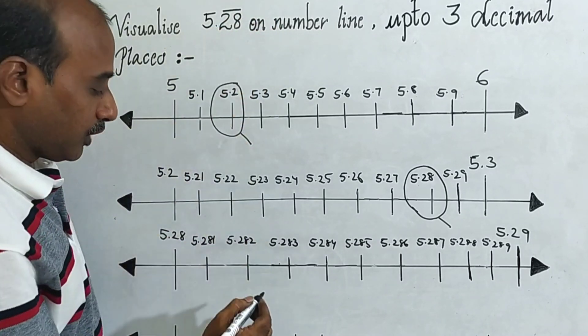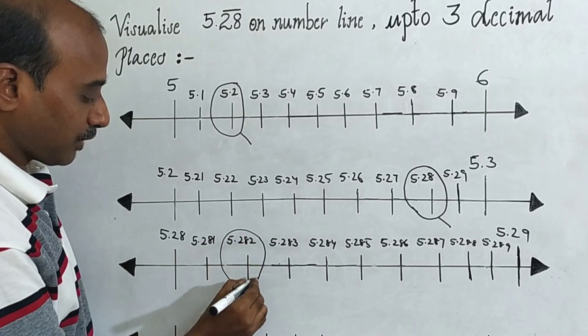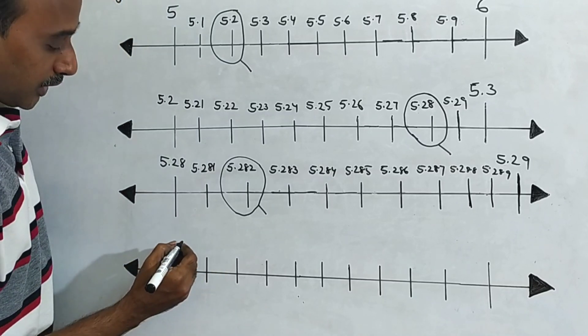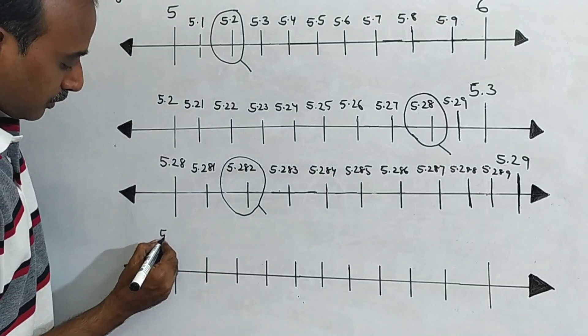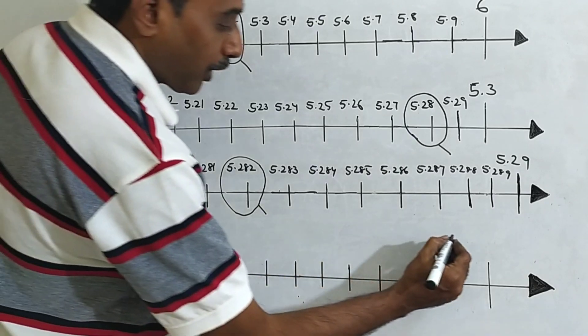Where is 5.28? You can see here 5.28. You have to magnify this. Now come to, on the number line take 5.282 to 5.283.